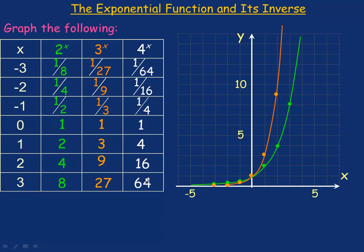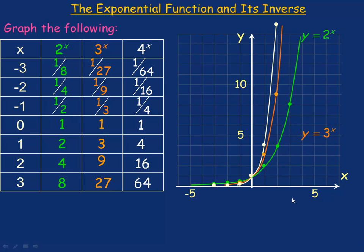The last couple of values are too high to graph, but we can graph the first several. 1/64th is pretty difficult to graph, but we go left 3 and up 1/64th, making it look like it's just barely above the x-axis. Plotting the other points — 0, 1 is here, same as the first two. 1, 4 would be right there. And 2, 16 is just off the top of the graph. We draw a smooth curve between them and label all the curves.